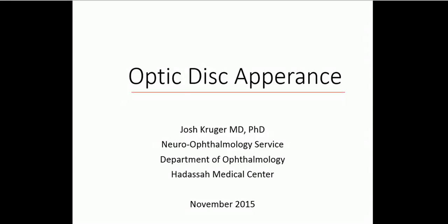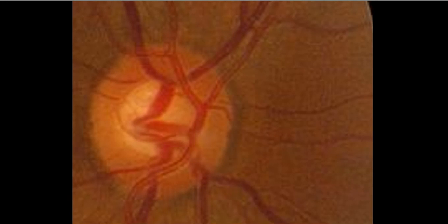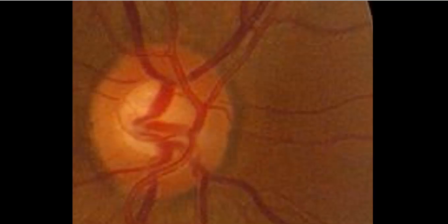In this section, we're going to discuss how to evaluate the appearance of the optic nerve. We'll use this picture as an example. If we were examining this optic nerve and describing it, there would be certain things that we would be expected to address in our description.